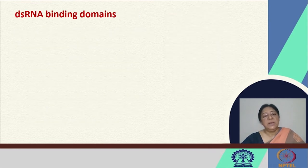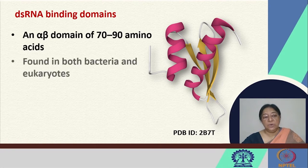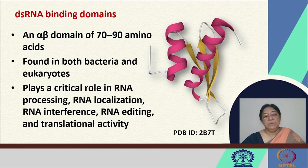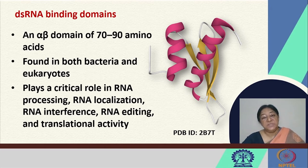The double-stranded RNA binding domain has a specific motif — an alpha-beta domain of around 70 to 90 amino acids found in both bacteria and eukaryotes. This plays a critical role in RNA processing, RNA localization, RNA interference, RNA editing, and translation activity. These are large domains because they require specificity and structural complementarity to bind with their specific ligand, in this case double-stranded RNA.